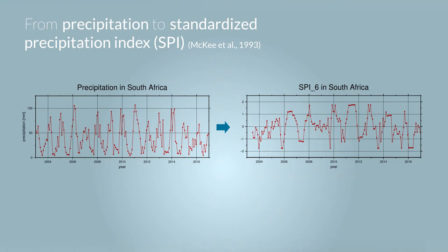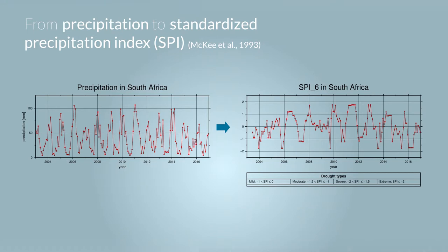Here are the results for the SPI in South Africa. We have SPI-6, using 6-month accumulated precipitation. The values range from about minus 2 to 2. We again have severity classes as with the percentile indicator, but the ranges are a little different. Notably, this indicator is not as noisy as the percentile indicator, so we can better extract temporal drought events and their duration — for example, 2004 shows a low peak, and in 2016 we see a drier period.